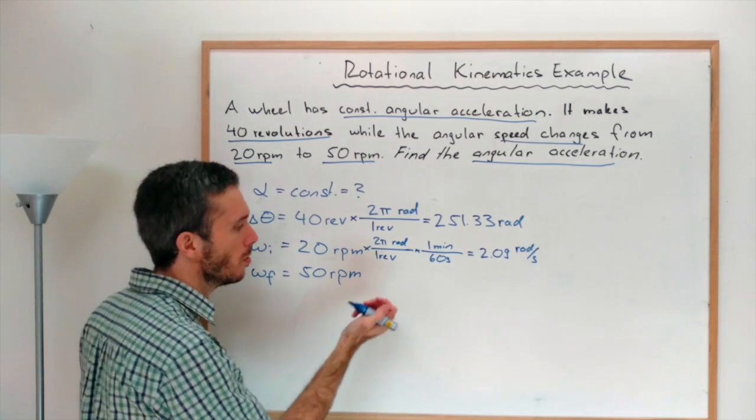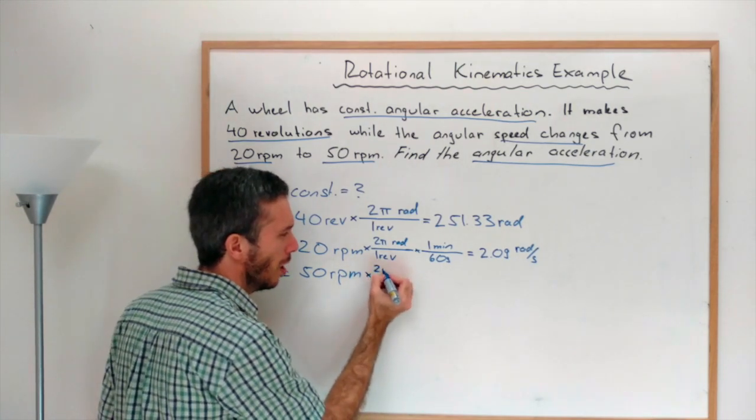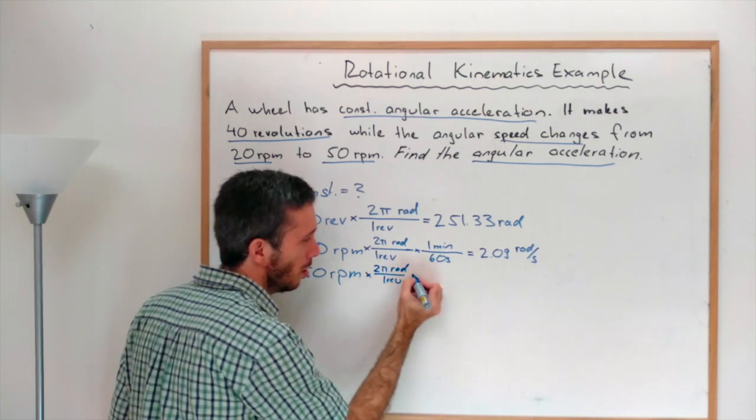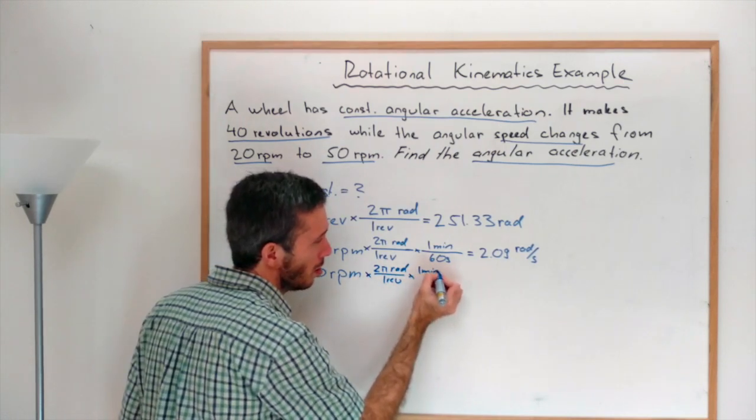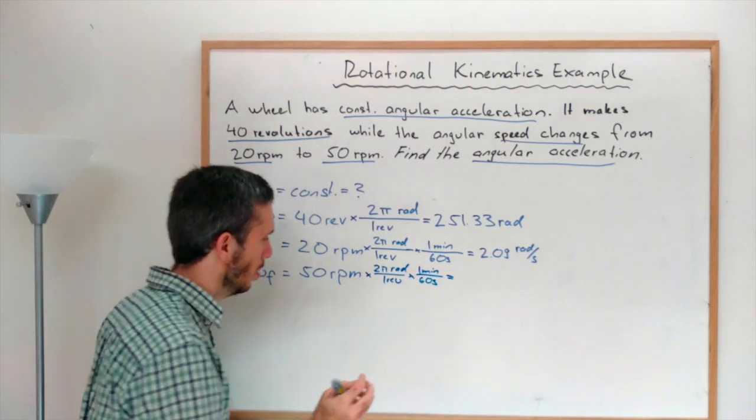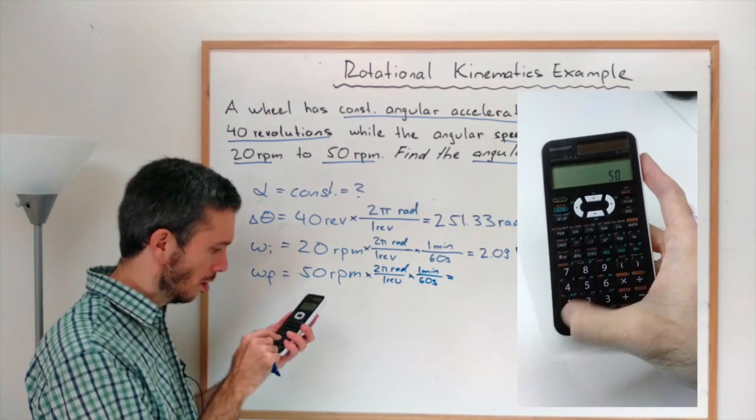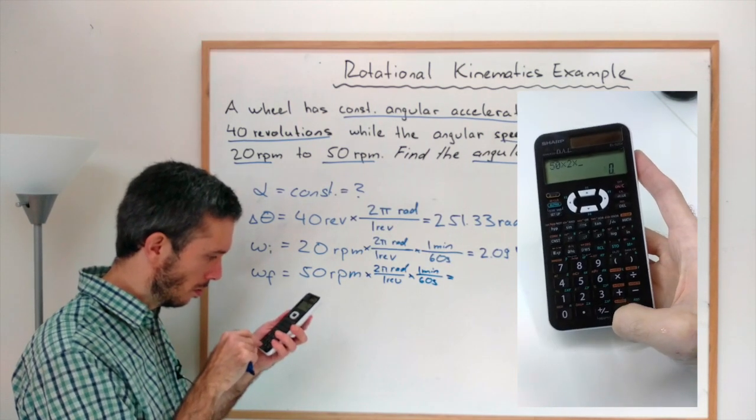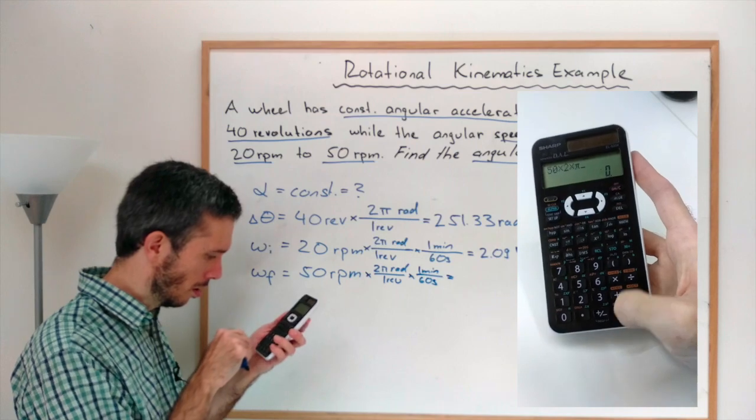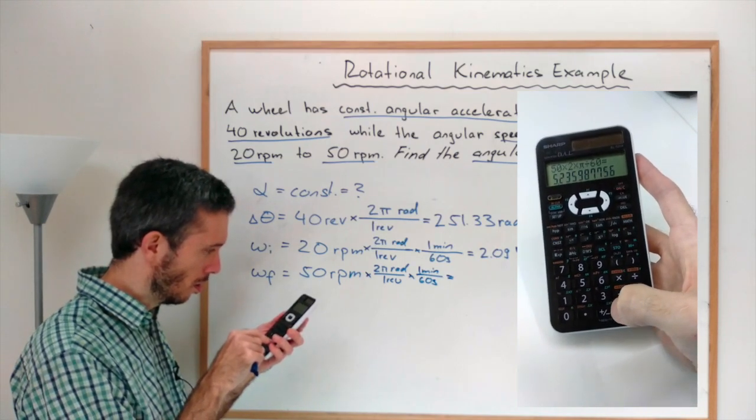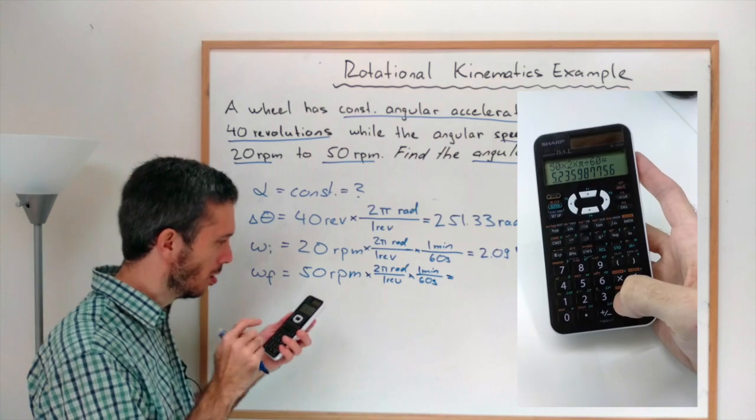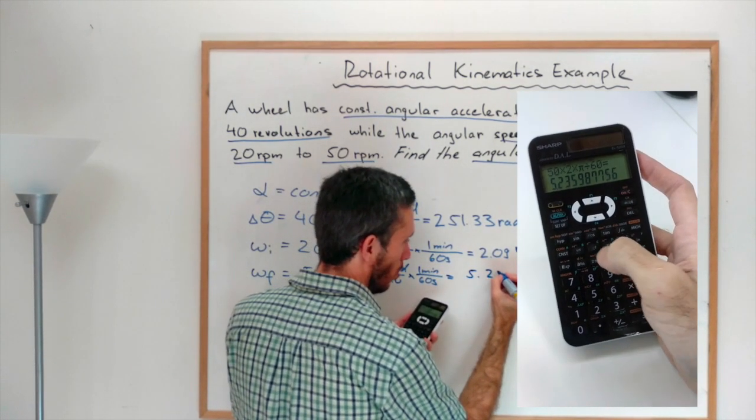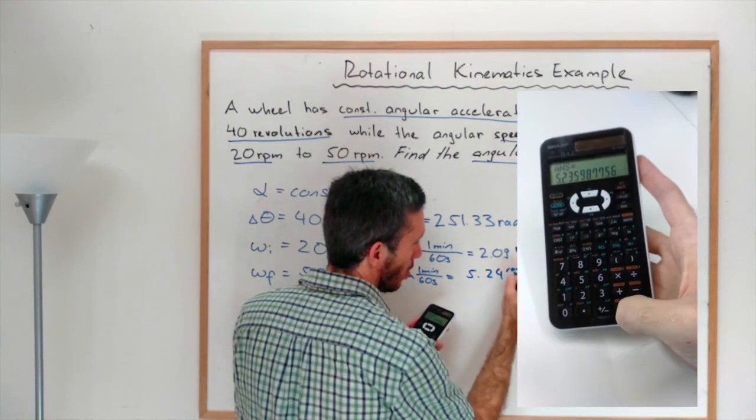The omega final is 50 rpm, so we do the same thing. Times 2 pi rad over 1 revolution, times 1 minute is 60 seconds. Gives me 50 times 2 times pi divided by 60, gives me 5.24 rads per second.